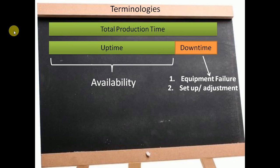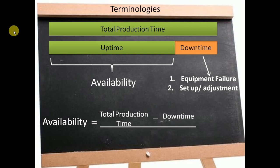Uptime, which is also called availability, is mathematically calculated as the ratio of total production time minus downtime, which is nothing but uptime, divided by the total production time.